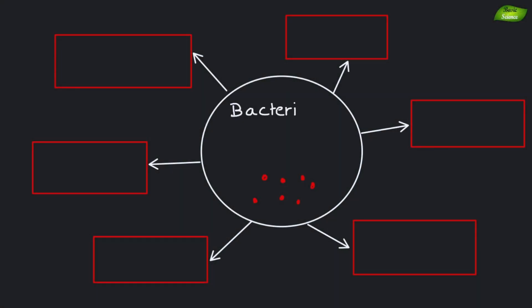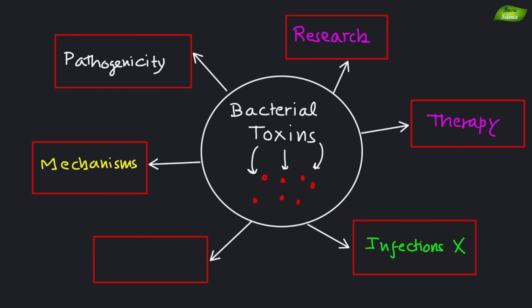Bacterial toxins are key aspects of bacterial pathogenicity. With diverse mechanisms, they can severely affect host organisms. Continued research into bacterial toxins is vital for developing new therapeutics and preventive measures against bacterial infections, which can ultimately reduce their impact on public health.